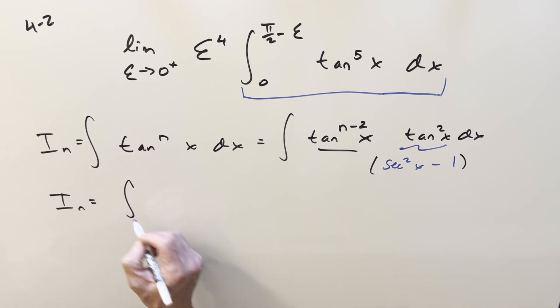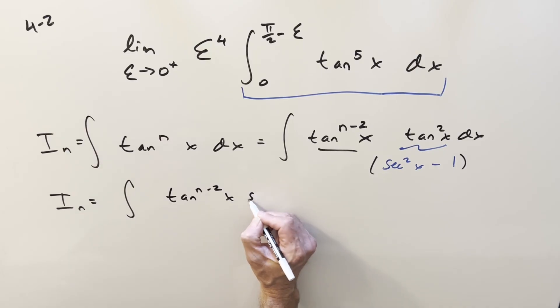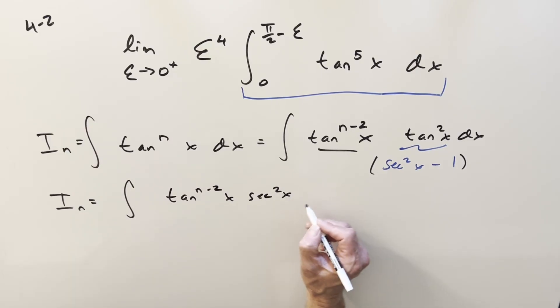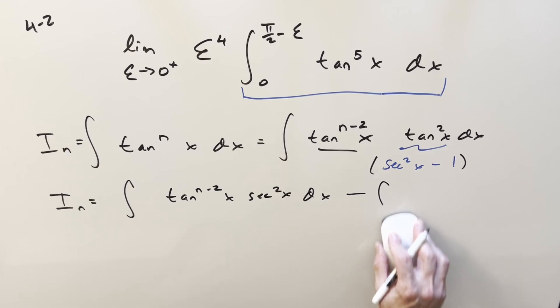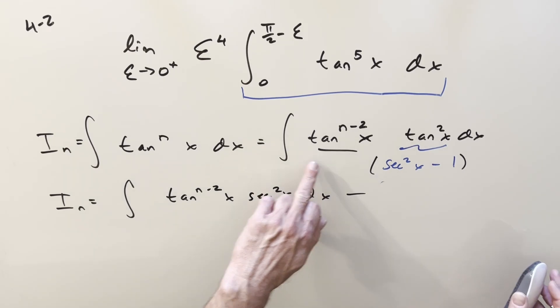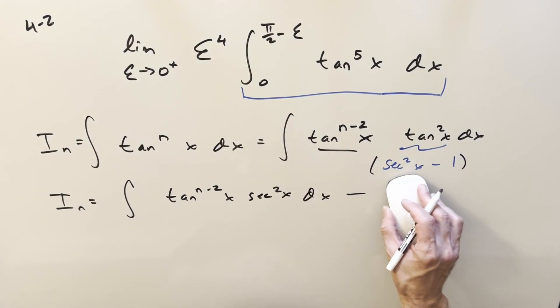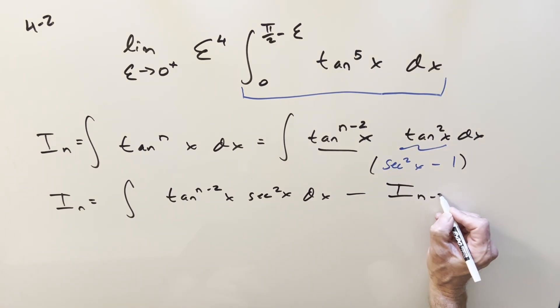So what's going to happen for the first one, this is the one that's perfectly set up for a u substitution, because the derivative of tangent is going to be secant squared x. Then we've got a minus just distributed to this. Let's not even write it because this is just going to be the same as this with the power reduced by 2. So this thing right here is just going to be i sub n minus 2.